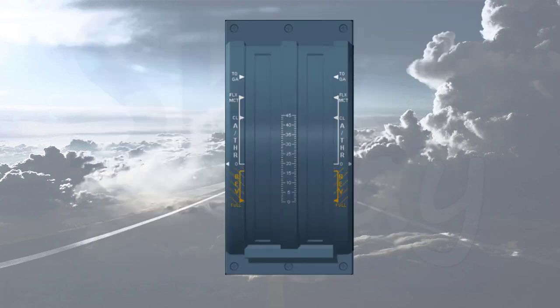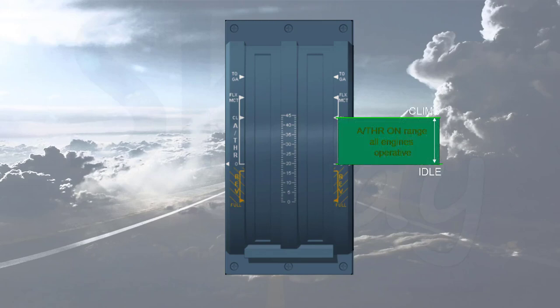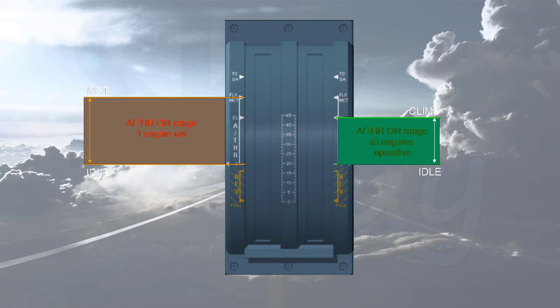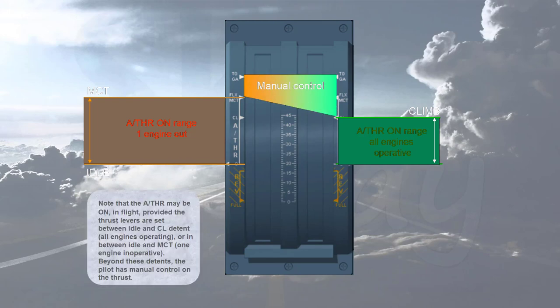Whenever the pilot brings the thrust levers back into climb detent, the auto thrust is automatically back on in the appropriate mode. Note that the auto thrust may be on in flight provided the thrust levers are set between idle and climb detent — all engines operating — or between idle and MCT with one engine inoperative. Beyond these detents, the pilot has manual control on the thrust.